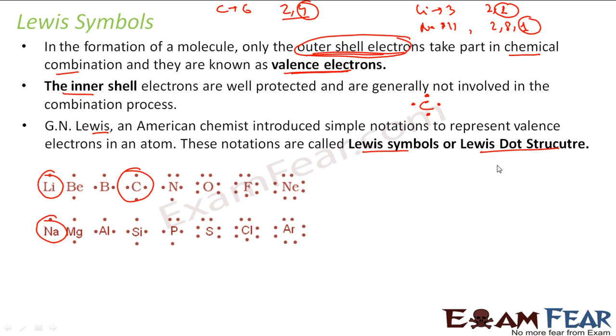Similarly for boron, boron has atomic number 5, so atomic configuration is 2, 3. The outermost electron has 3 electrons, so you write boron and put 3 electrons like this. You can put 3 electrons anywhere—like this or like this, doesn't matter. You just have to put 3 electrons surrounding boron, and that is how you write boron.